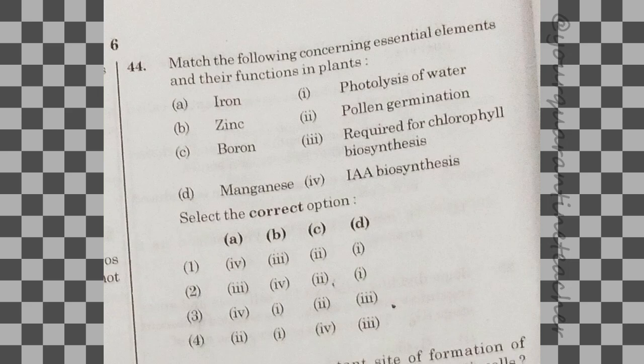44th question: match the following. Iron is required for chlorophyll biosynthesis; zinc for IAA biosynthesis. The answer is option 2.